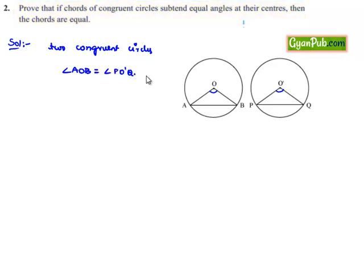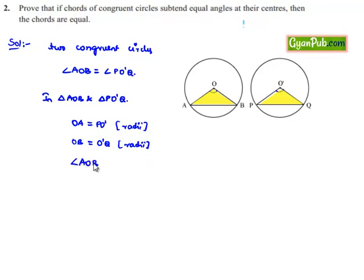We need to prove that AB is equal to PQ. In order to prove this, let us consider triangle AOB and triangle PO'Q. OA is equal to O'P since both circles are congruent, so the radii will be equal. And OB is equal to O'Q as they are also the radii of the circles.